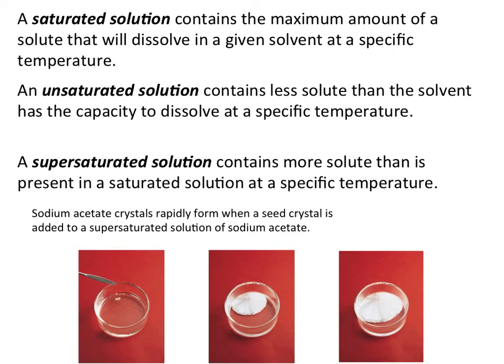A supersaturated solution is unique — in this case, you can go past the saturation point. Usually we have to increase our temperature in order to get additional solute to dissolve. For example, if you have sugar in a cold glass of tea, it doesn't dissolve very well. However, if you take the same volume of hot tea, you can dissolve significantly more sugar. You can continue to add sugar until you have a solution that has gone beyond the saturation point.